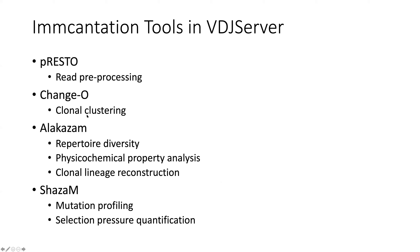Change-O is used to assign clones and do the clonal clustering of the sequences. Alakazam provides other statistics like diversity profiles on the repertoires, physicochemical properties on individual rearrangements, and lineage reconstruction. And SHazaM is used for mutation profiling and selection quantification. So all of those are available in VDJ Server.